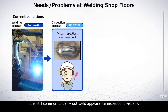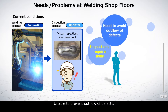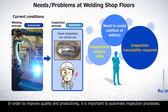It is still common to carry out weld appearance inspections visually. Operators in charge of inspections require a high level of skills, yet are unable to prevent outflow of defects. The traceability of inspection results is not available. These and many other issues exist. In order to improve quality and productivity, it is important to automate inspection processes.